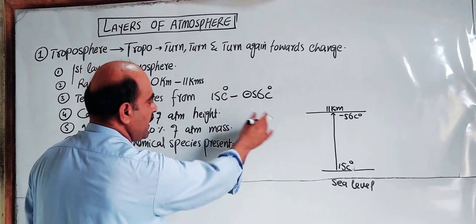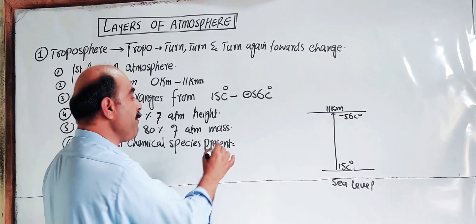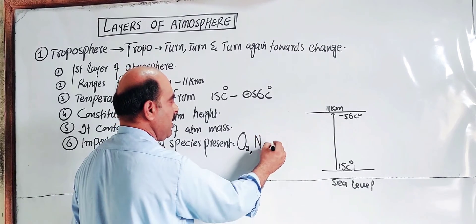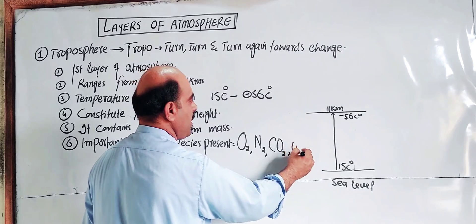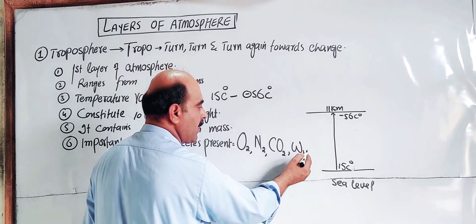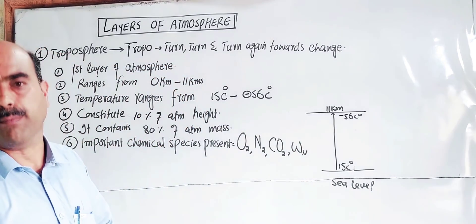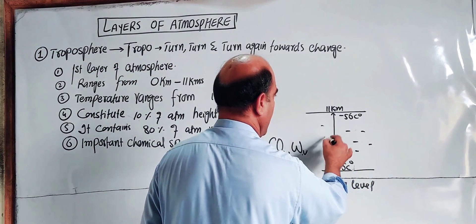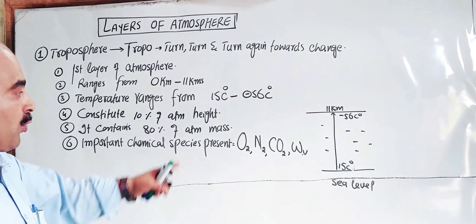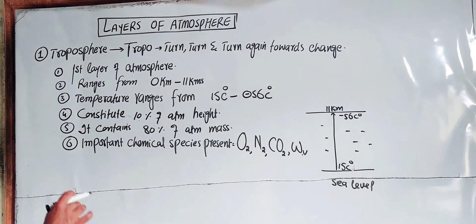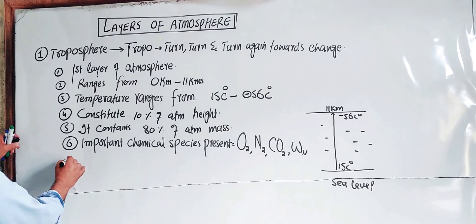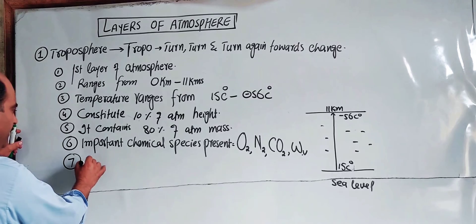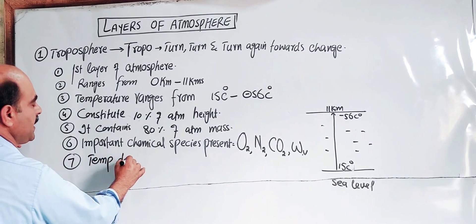The important chemical species in the troposphere are mainly oxygen gas, nitrogen gas, carbon dioxide, and water vapors. These are the normal gases present up to 11 km. Temperature falls with change in height in this layer.